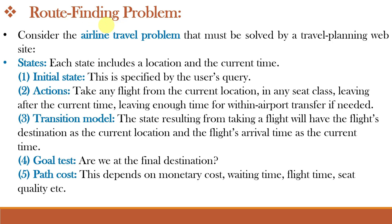The first example is the route finding problem. The route finding problem is defined in terms of specified locations and transitions along links between them. The route finding algorithms are used in a variety of applications such as routing in computer networks, military operations planning, and airline travel planning systems. Consider the airline travel planning problem that must be solved by a travel planning website like MakeMyTrip or Goibibo.